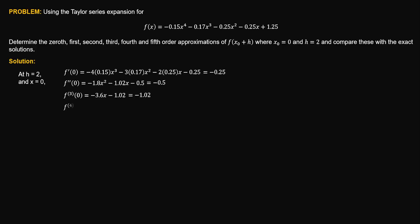The fourth derivative is negative 3.6 — it is constant. This means the fifth derivative is just equal to 0, and any derivative higher than the fifth is also equal to 0.